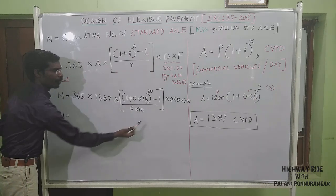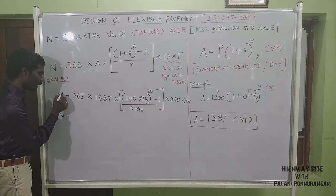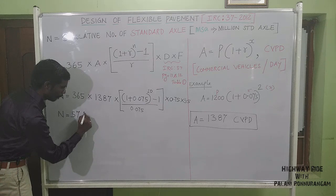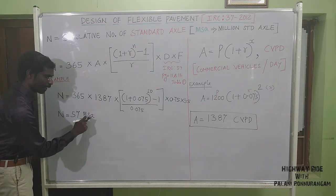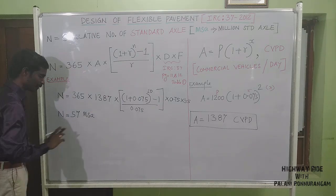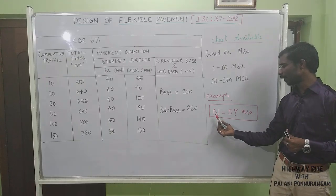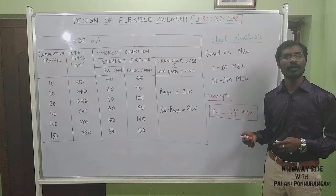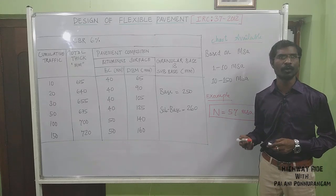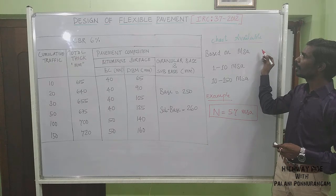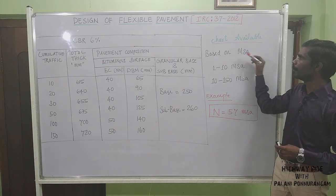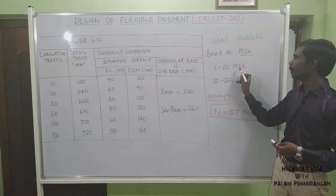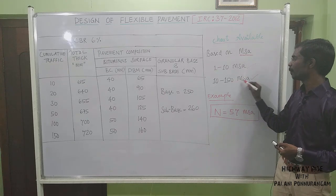Based on these values we calculate N — the number of standard axles — and get approximately 57 MSA (Million Standard Axles), which is the Cumulative Million Standard Axle value. After calculating capital N, refer to the IRC 37 code for design of flexible pavement. The code contains charts for different MSA ranges: 1 to 10 MSA, and 10 to 150 MSA, for various CBR values.